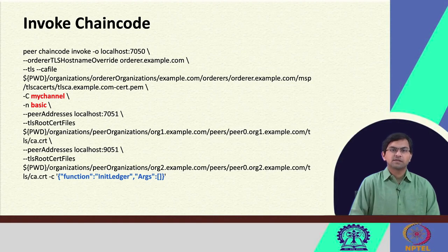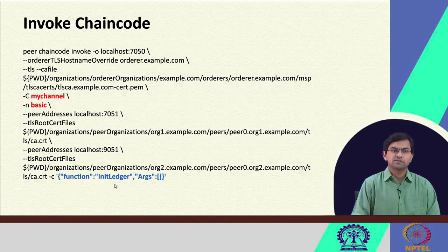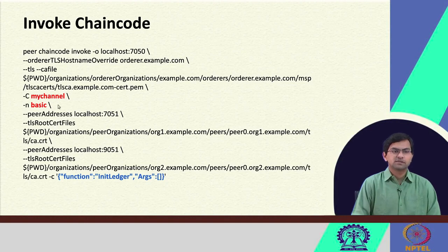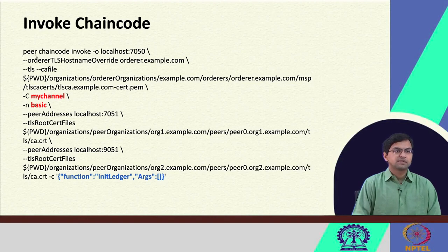After the environment variables have been exported, you can use the peer chaincode invoke command to invoke a chain code. This entire command may look intimidating, but it is really simple — most of the parts you do not need to worry about. You just need to ensure that the channel name and the chain code name are properly set. The argument or command we want to invoke is the function inside the chain code — here we are invoking 'InitLedger' with an empty arguments list. The command is: peer chaincode invoke, and then we pass a bunch of other options.